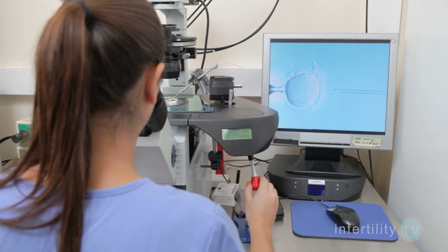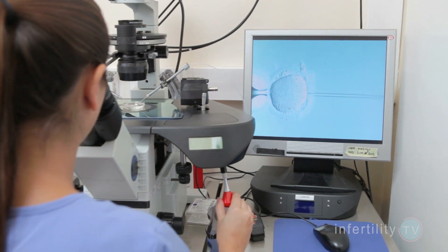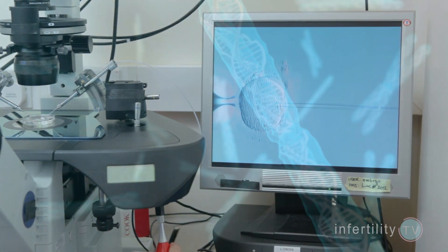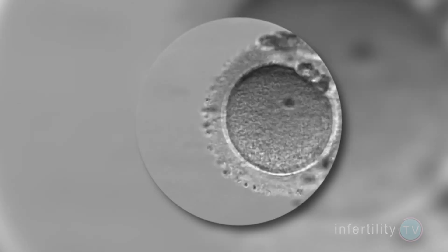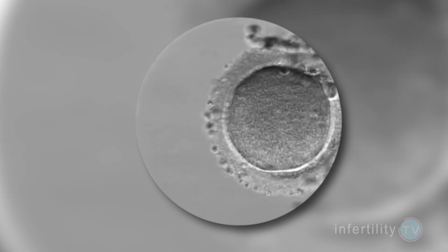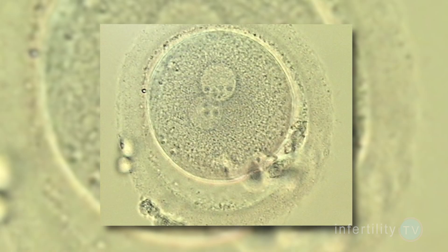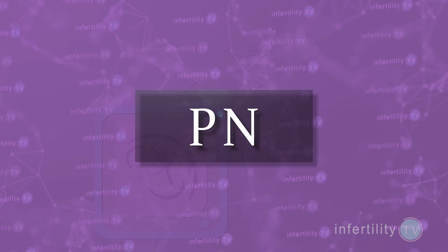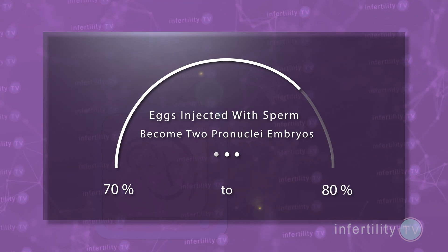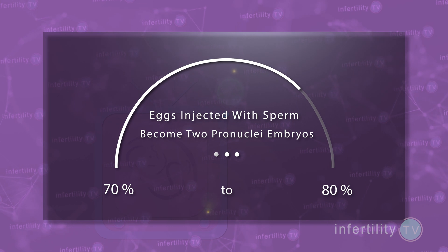When the expert embryologists at my center, IVF1, inject a sperm into a mature egg, it is not yet considered fertilized even though there is a sperm inside the egg. After the sperm enters, the egg is responsible for organizing all the genetic material. One step can be seen under the microscope: a new membrane forms around the chromosomes from the sperm and egg — these are called pronuclei. A normally fertilized egg contains two pronuclei, one from the male and one from the female, abbreviated as 2PN. Typically, about 70-80% of injected eggs will become 2PN embryos.